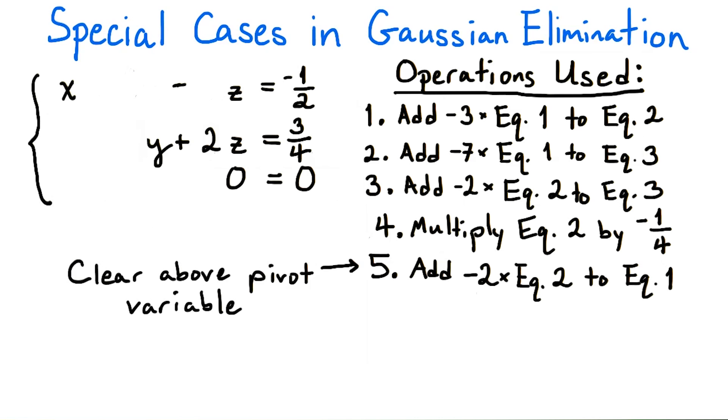Then, like we normally do in Gaussian elimination, we will clear the terms above the leading y term. So we subtract 2 times the second equation from the first. This gives us x minus z equals negative 1 half in the first equation.